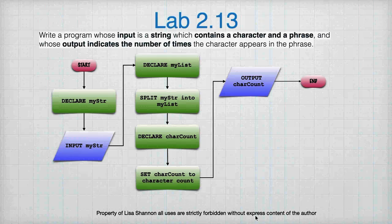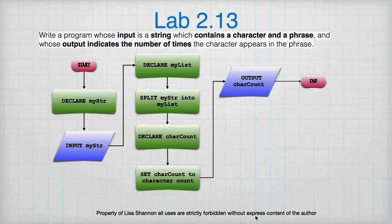For Lab 2.13, we're going to write a program whose input is a string containing a character and a phrase, and whose output indicates the number of times that character appears in the phrase. You're going to declare a string — and by the way, for those who didn't see this last week, flowcharts and pseudocode are language-agnostic, so there may be steps you can combine, like declaring a string and having the input on the same line. You're going to declare a mystring and a mylist, take the input, and split it into mylist using a space delimiter.